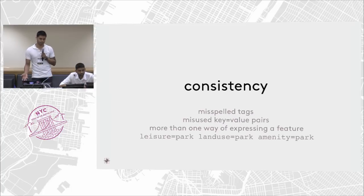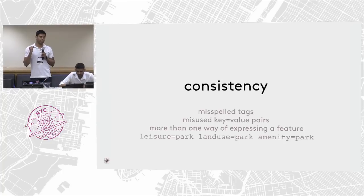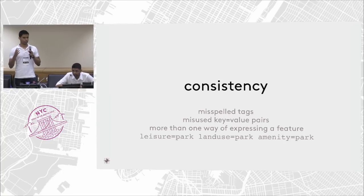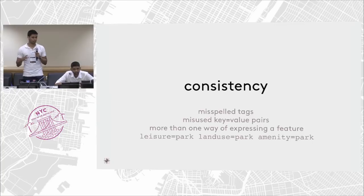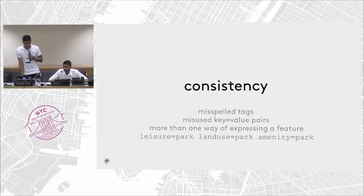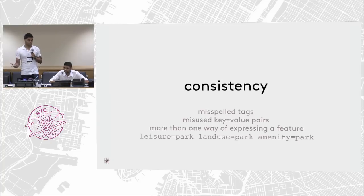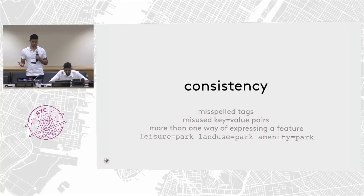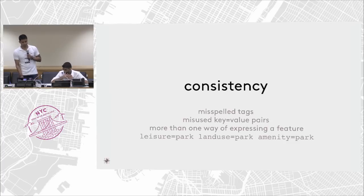Next, let's talk about data consistency. Most geocoders are interested in a finite number of tags. They ignore nodes tagged as lampposts, benches, and so on, but are interested in parks, buildings, address points, and things like that. If you have misspelled tags, you basically miss those nodes from the geocoding indexing process. Similarly, if there are misused key-value pairs, that's another problem. There's more than one way of expressing a feature — for example, 'leisure=park' is the correct way, but sometimes 'landuse' or 'amenities' is also used for parks.